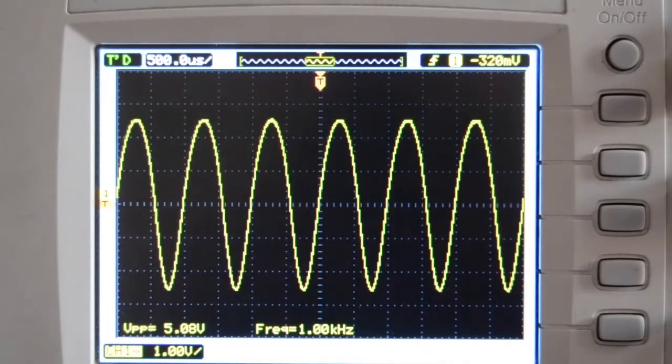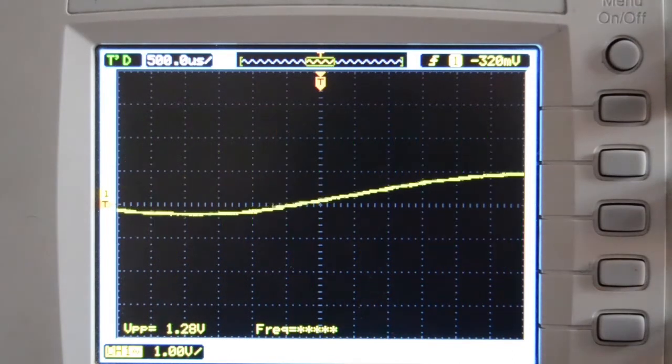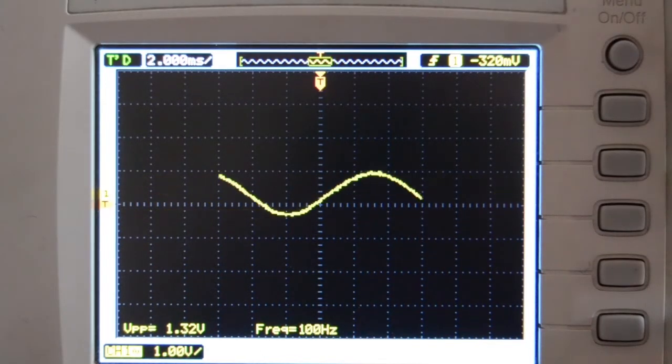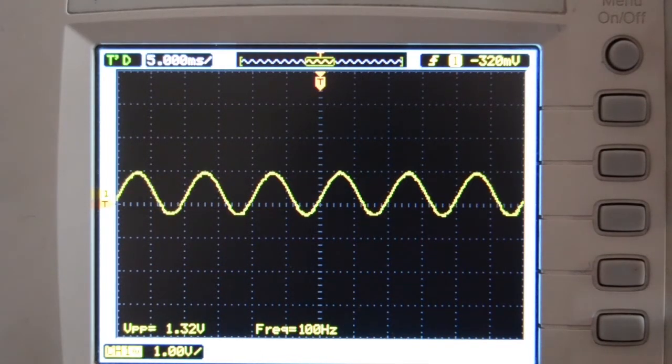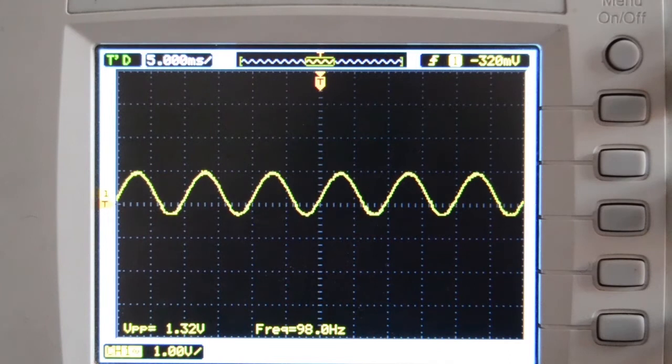Now, let's verify the frequency response characteristics of RC Coupled Amplifier. On applying a low frequency, say 100Hz, we can observe that the output voltage has lowered to 1.3V.